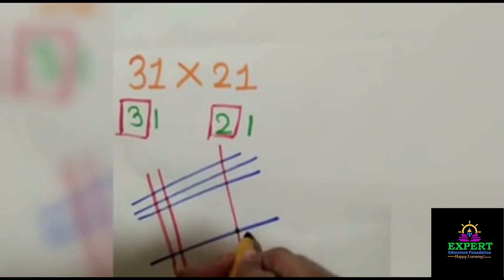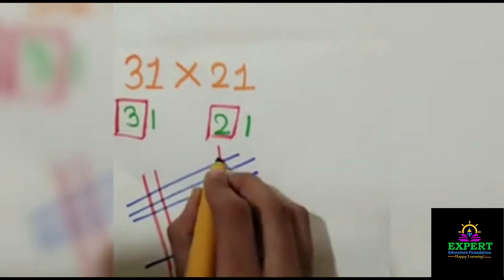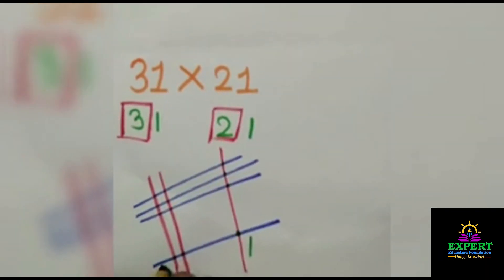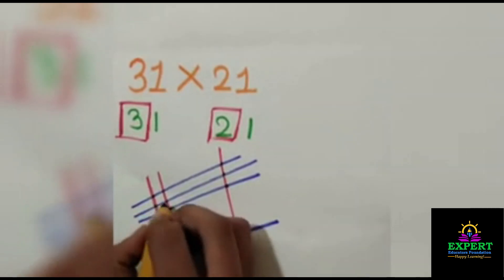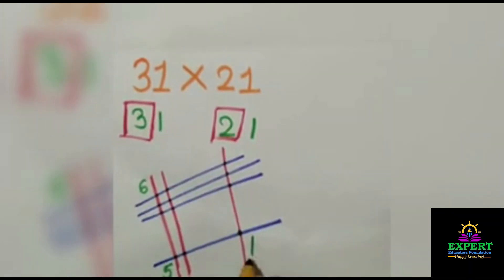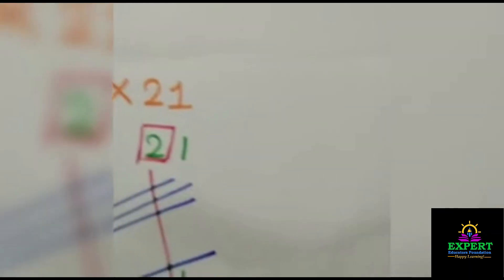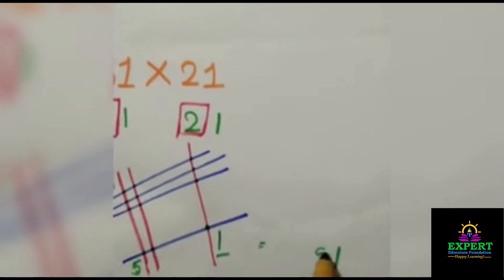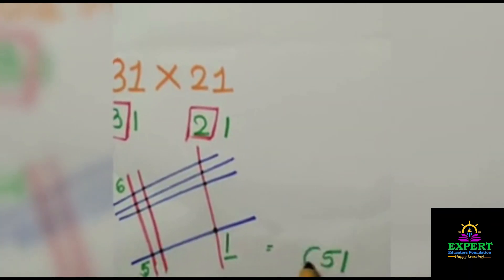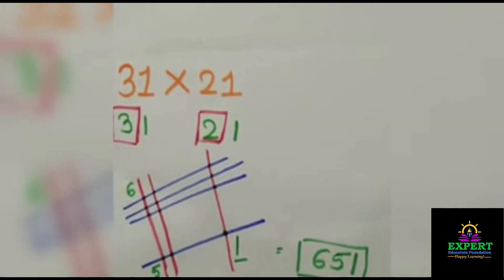So this is the first count: 1, 2, 3, 4, 5. Then 1, 2, 3, 4, 5, 6. So this we will put at last: 1. Then this is 5, and this is 6. And our answer is ready: 651.